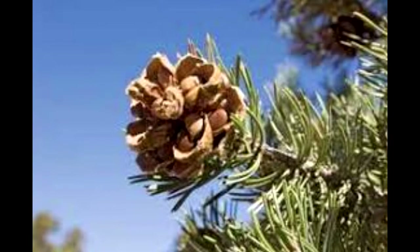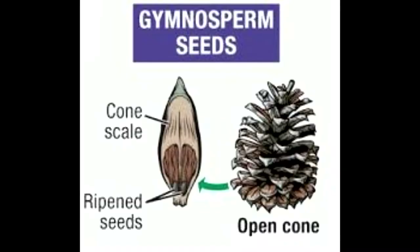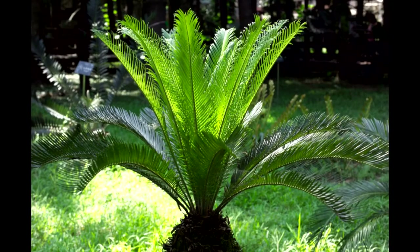Some gymnosperm species like conifers have male and female cones on the same tree, meaning they are monoecious. Others, like cycads, have separate male or female cone-producing trees. In order for pollination to take place, the gametes must come into contact with one another. This typically occurs via wind, animal, or insect transfer, meaning water is not needed for reproduction with gymnosperms.